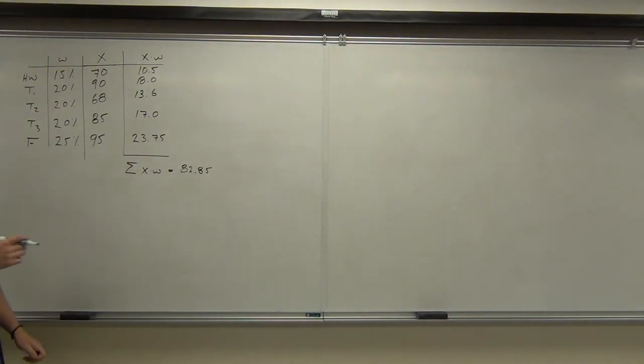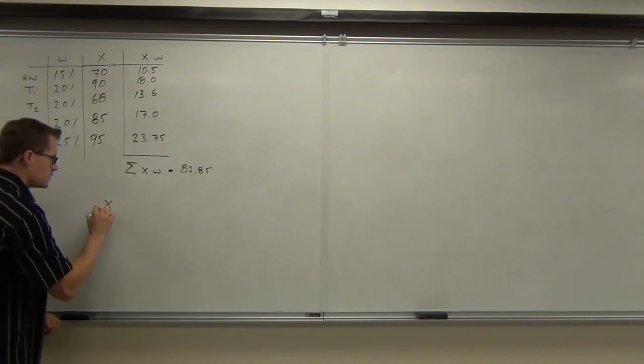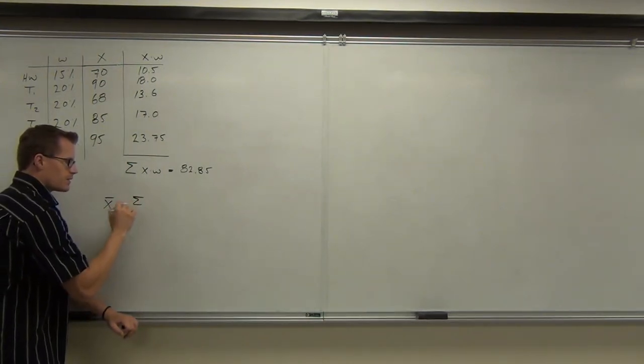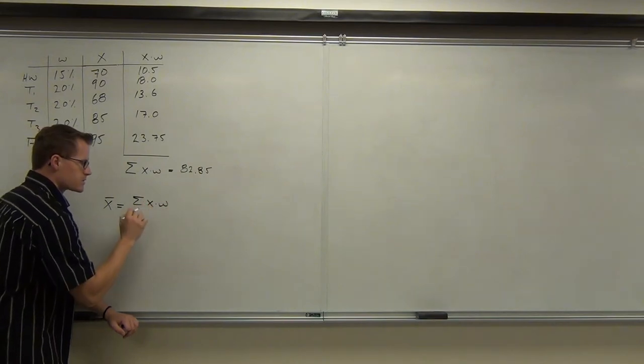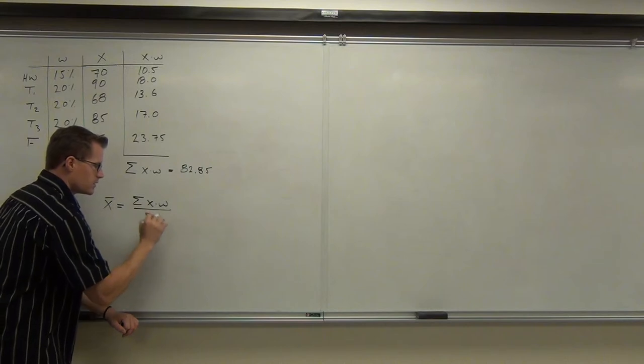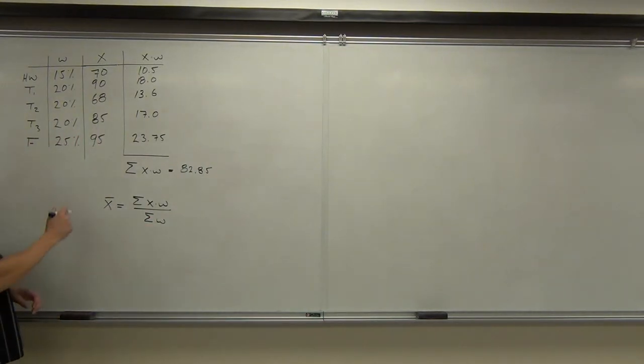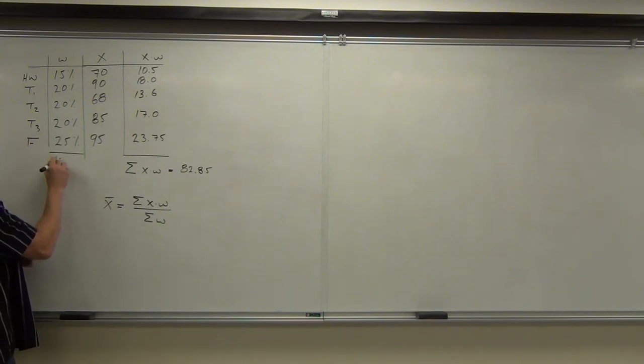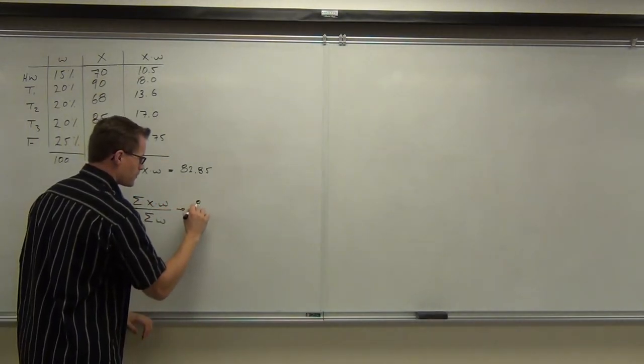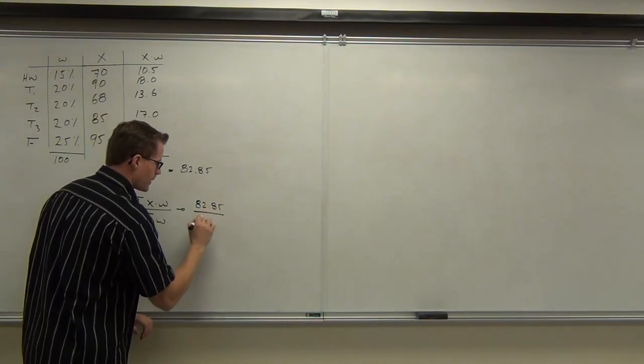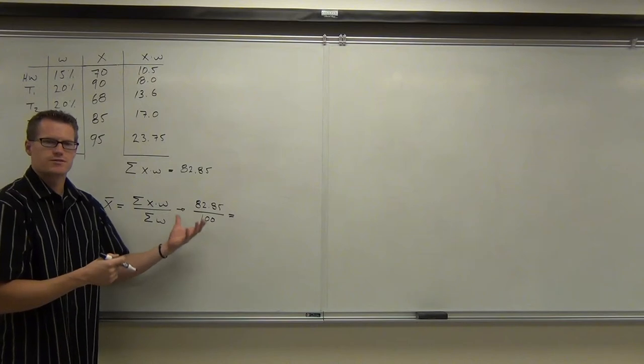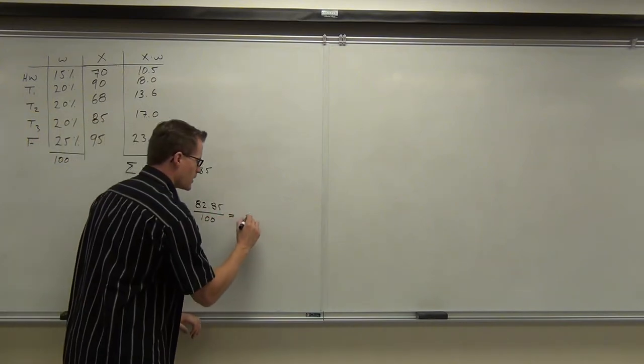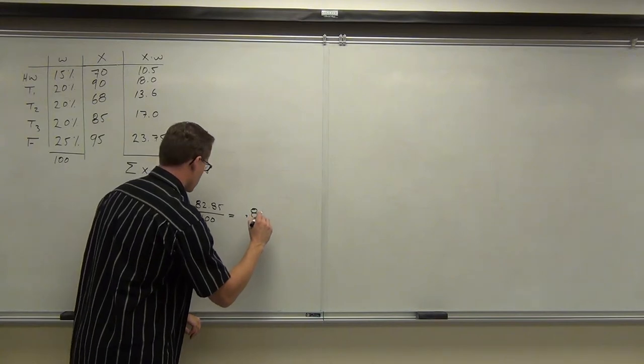Here's the last little bit. In order to find the mean, this is a sample, sample mean. What we're going to do is we're going to take the sum of your x times w's, divide it by the sum of the w's, the weights. So what you need to do is figure out how much this all adds up to. Now this one's going to be pretty easy. How much does this all add up to? 100. Okay, so if we do this, divide by 100, we're going to have 82.85 divided by 100. Of course, dividing by 100 in this case is very easy. It's just moving our decimal place two spots to the left. We're getting .8285.